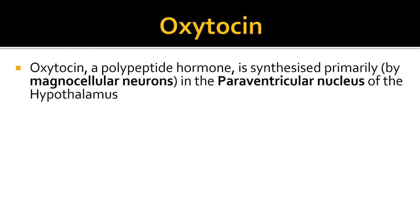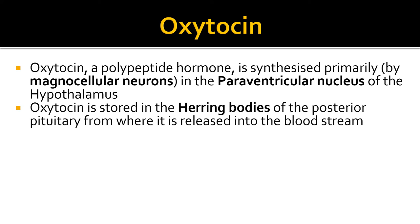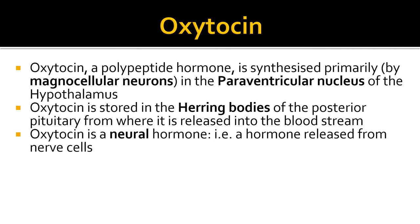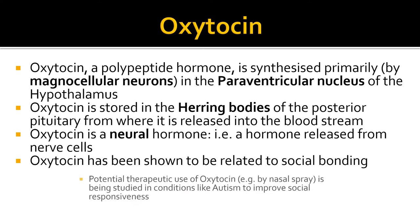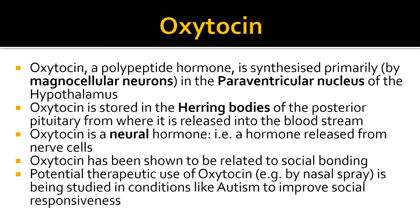Oxytocin is synthesized primarily by the magnocellular neurons in the paraventricular nucleus of the hypothalamus. It is stored in the herring bodies of the posterior pituitary, from where it is released into the bloodstream. It is a neurohormone — a hormone released from nerve cells — and has been shown to be related to social bonding. Potential therapeutic use is being studied in conditions like autism to try to improve social responsiveness.